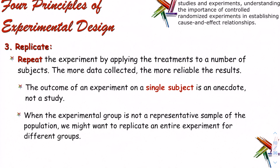Principle three is replication — repeating the experiment by applying treatments to a number of subjects. The more data collected, the more reliable the results. If you get a result just one time with one specific group, how likely is it to occur with a different group in Australia? The outcome of an experiment on a single subject is just an anecdote. When the experimental group is not representative of the population, we may want to replicate the entire experiment for different groups.